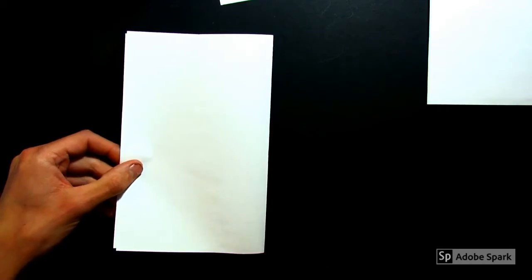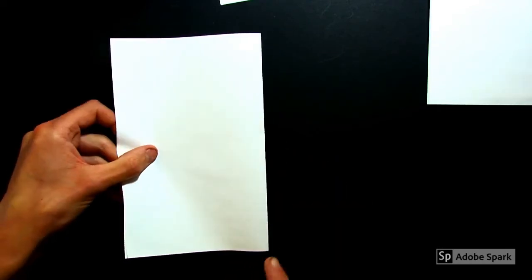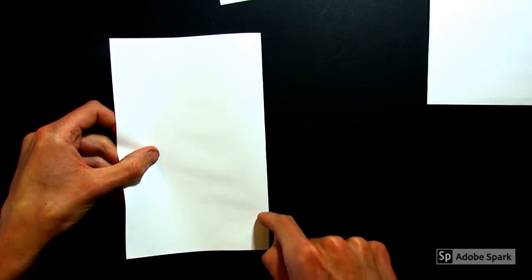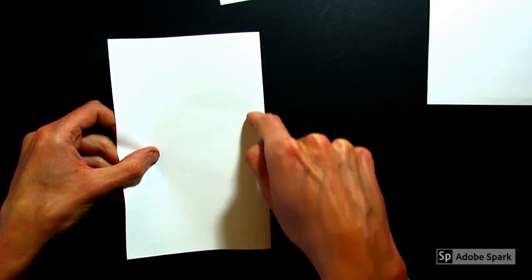Now, we are going to cut this folded piece of paper right along the spine. We're going to enter about an inch from the edge, cut along the spine, and then exit an inch from the other edge. Watch carefully.